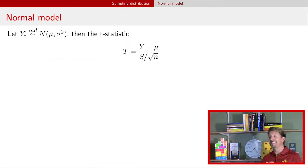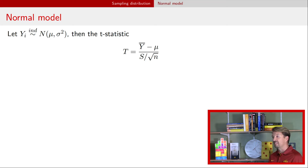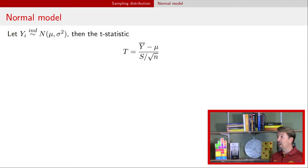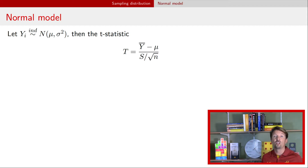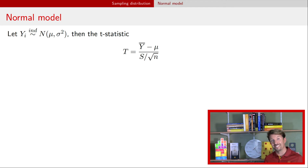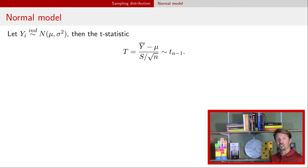If we calculate this statistic — y-bar minus mu divided by the sample standard deviation over the square root of the sample size — I'm giving you a hint of what distribution that quantity has. If you haven't seen it before, you should go back and watch the video about the t-distribution. This quantity, often called a t-statistic, has a t-distribution with n minus 1 degrees of freedom.